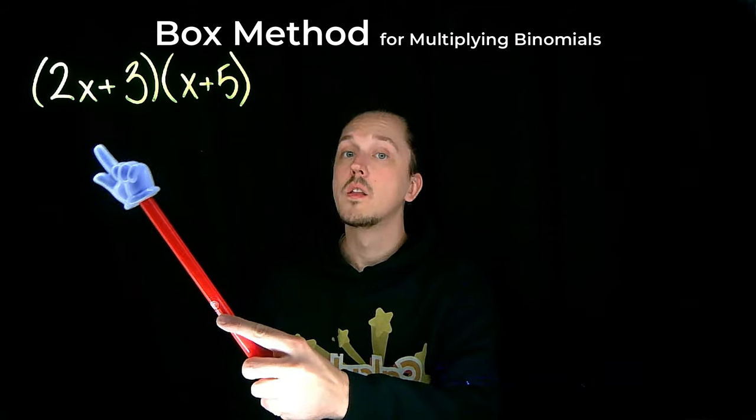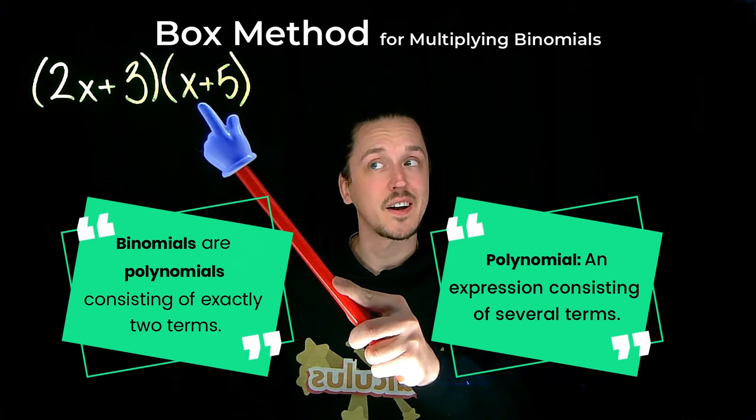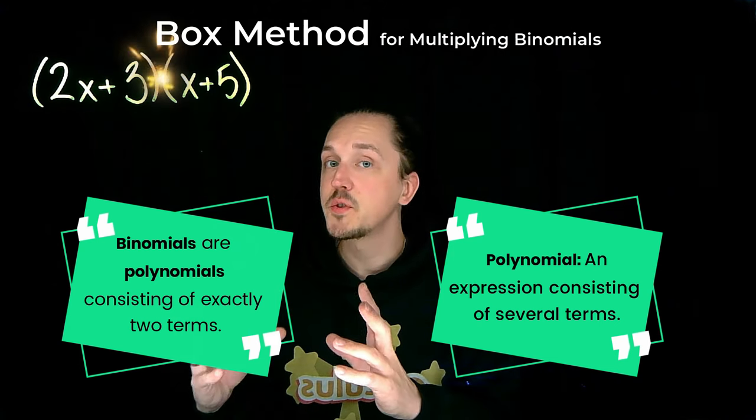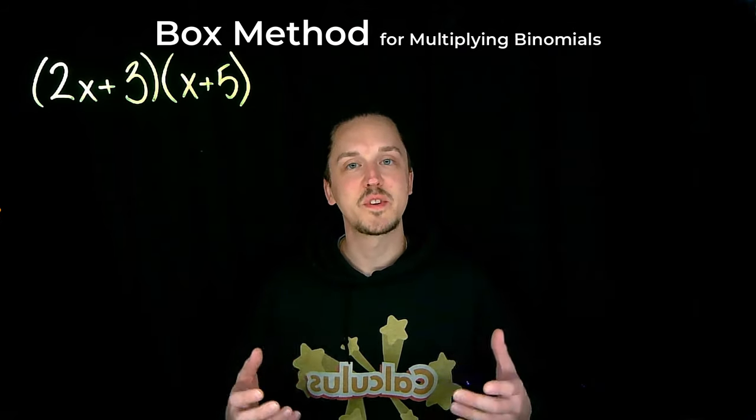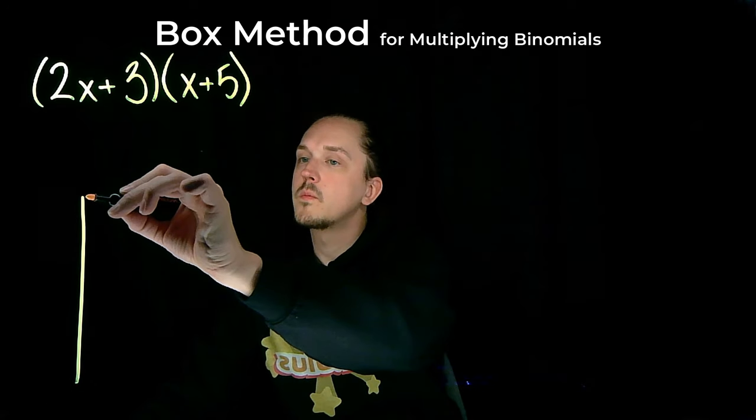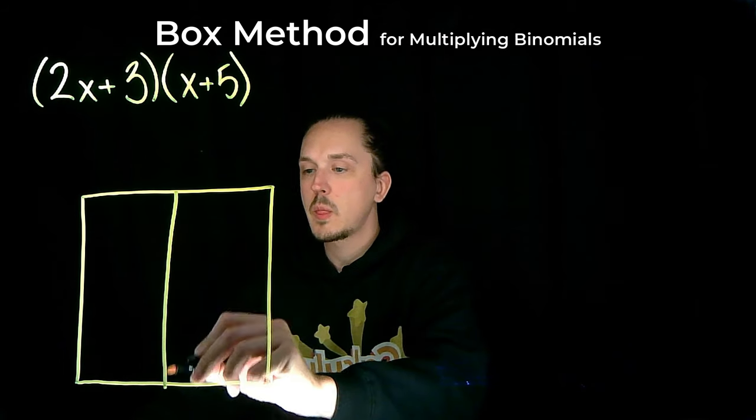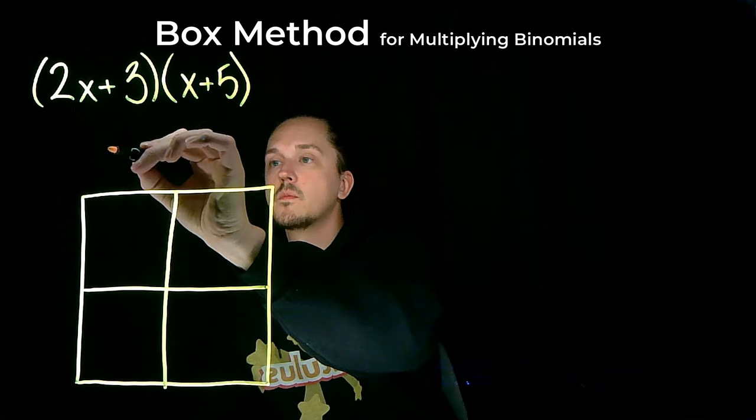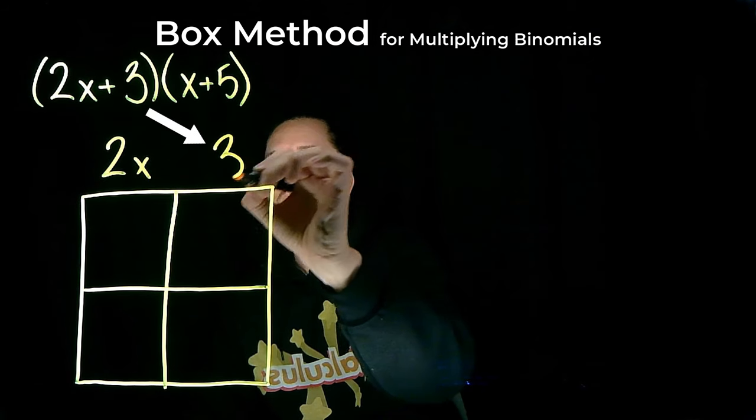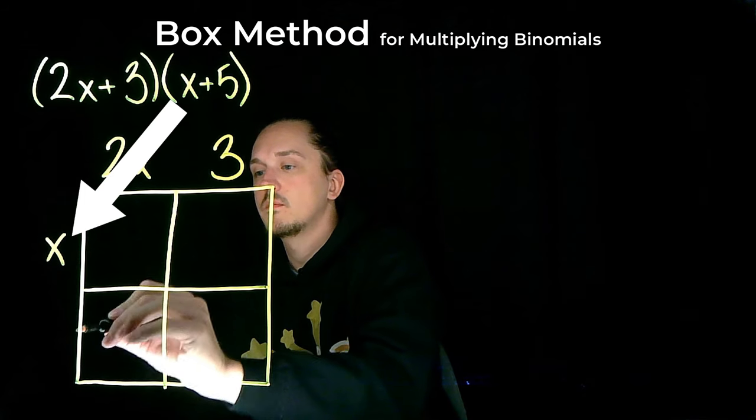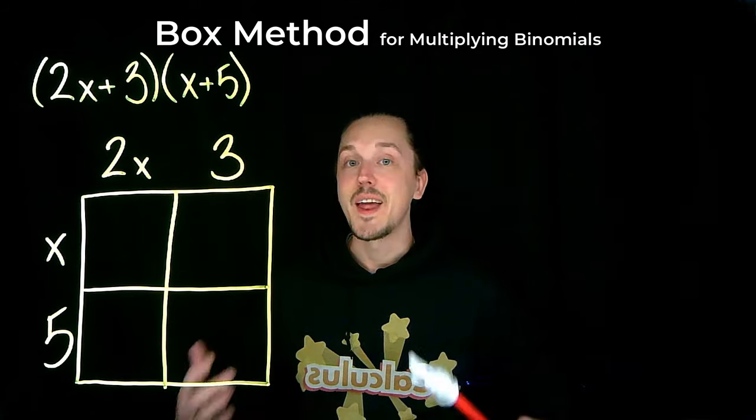Here we have two polynomials: 2x + 3 and x + 5. Multiplying these two polynomials together might seem tricky at first, but let me show you one of my favorite visual methods. First, we draw a large box and divide it into four smaller boxes arranged in two rows and two columns. Next, we write the two terms of 2x + 3 along the top and the two terms of x + 5 along the left side.